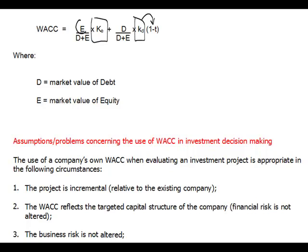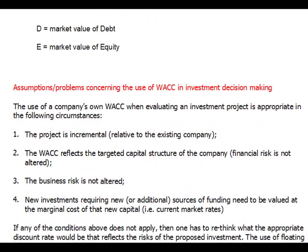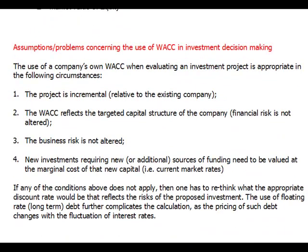The equity weighting reflects how much equity we have on the balance sheet, and the debt weighting reflects how much debt we have on the balance sheet. The equity weighting is applied to the cost of equity, and the debt weighting is applied to the after-tax cost of debt. We will very often use weighted average cost of capital as the discount rate in the calculation of NPVs, IRRs, and so on.